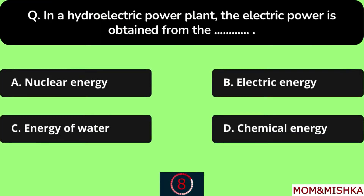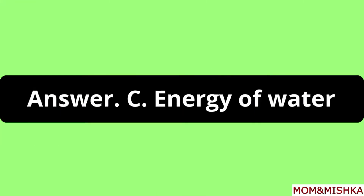In a hydroelectric power plant, the electric power is obtained from the blank. From the energy of water, Option C.